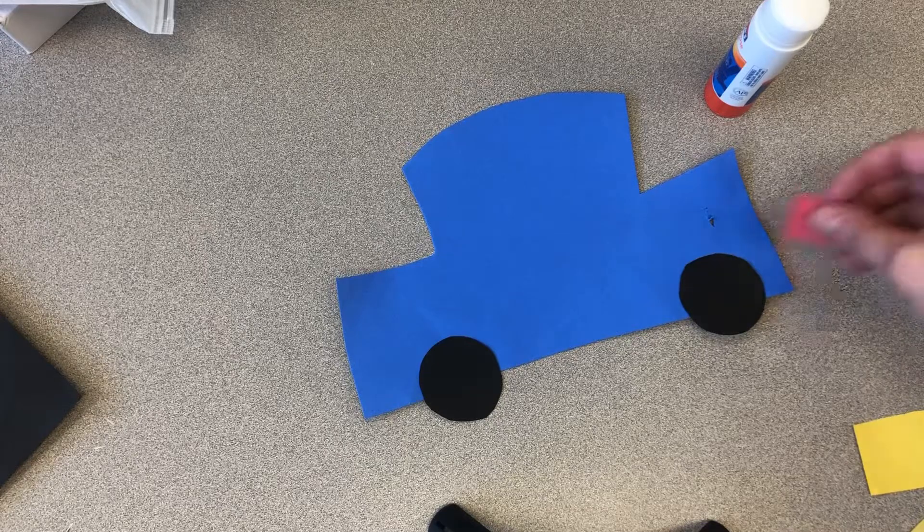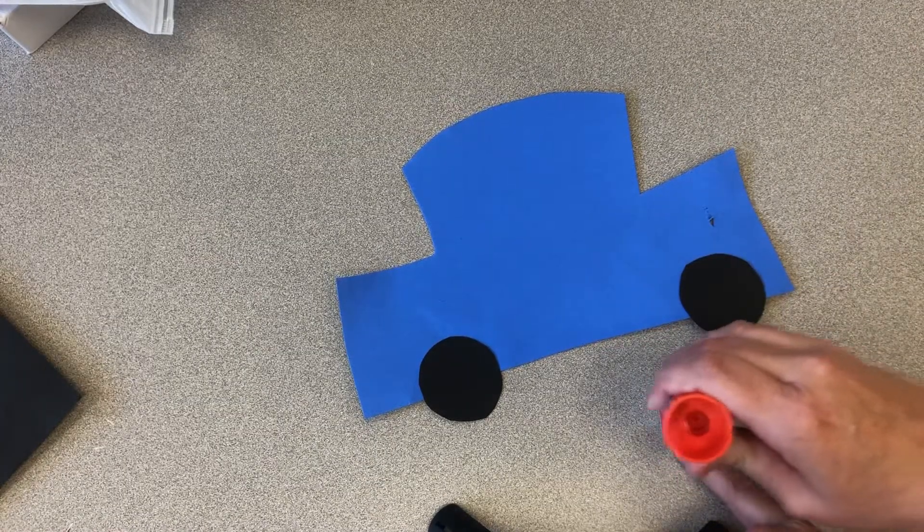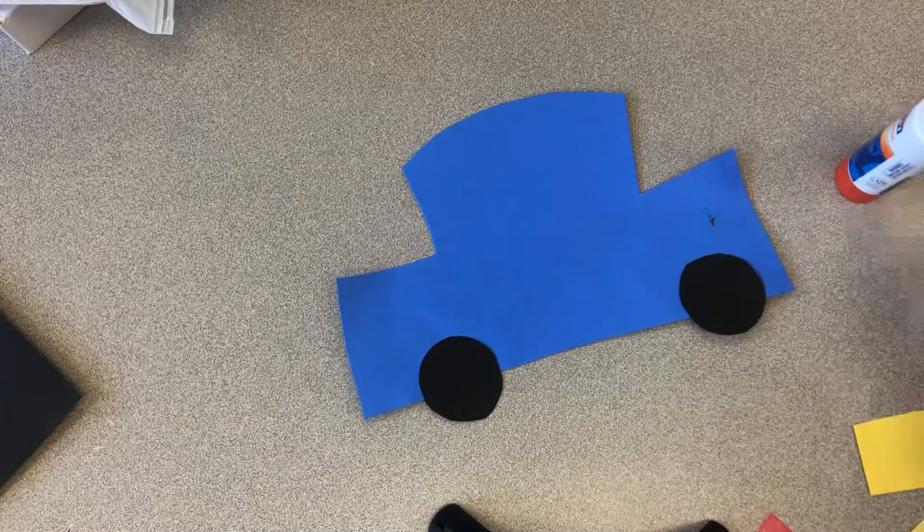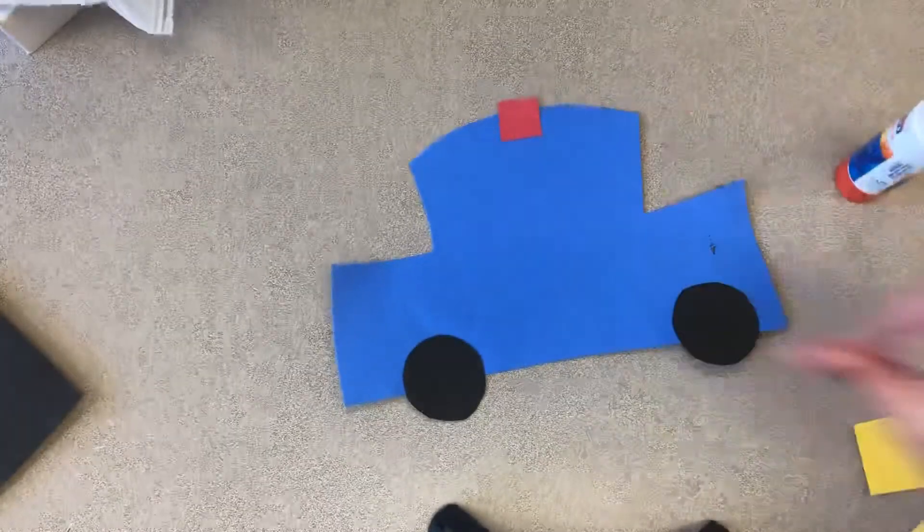Okay and then here is our siren, our little red square. Put some glue on there. I'm gonna put it right here on the top. That's where the sirens go.